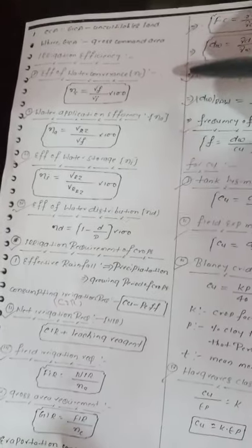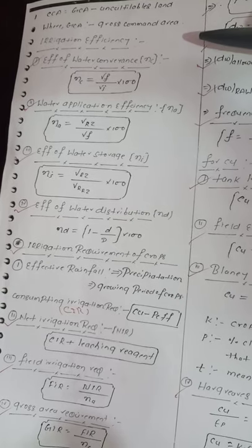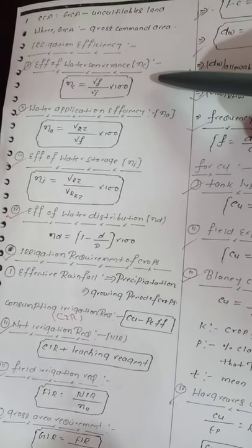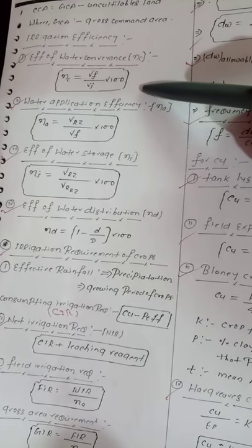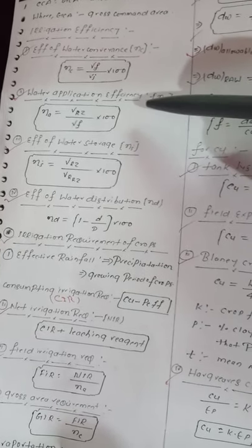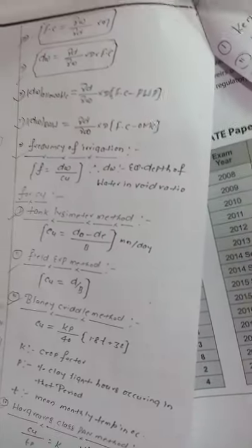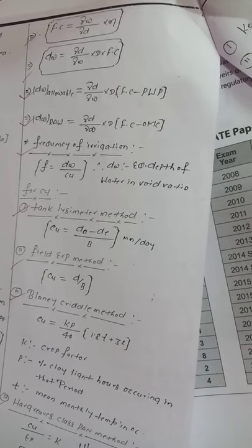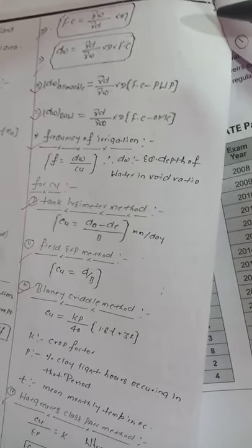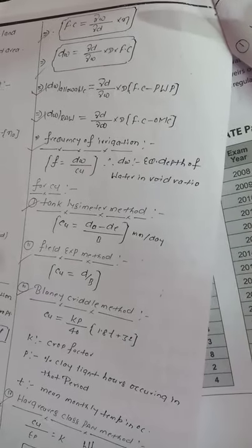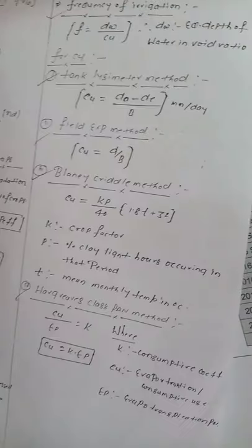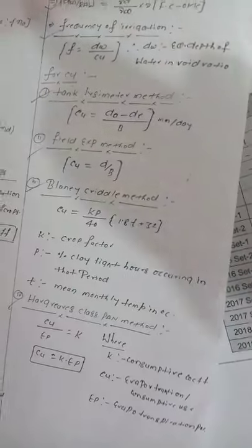Next, efficiency of water conveyance: ηc equals Va/(Va into 1 trade). Field capacity fc equals γw/(γs into n). Application efficiency equals conveyance into time into FC. I hope you remember all these formulas. In the next video, I'll explain each question.